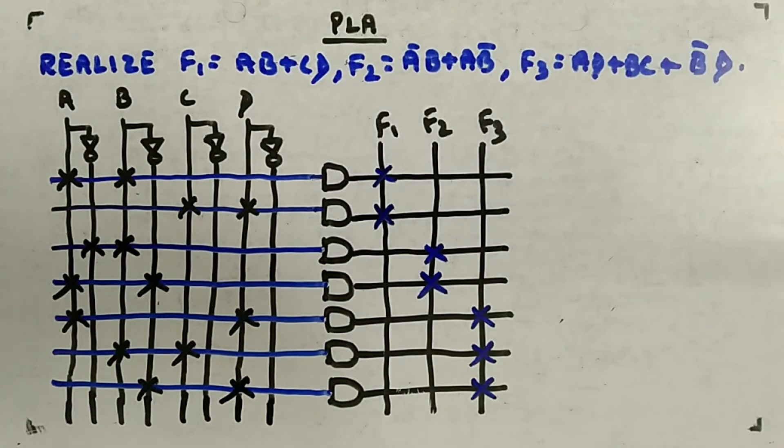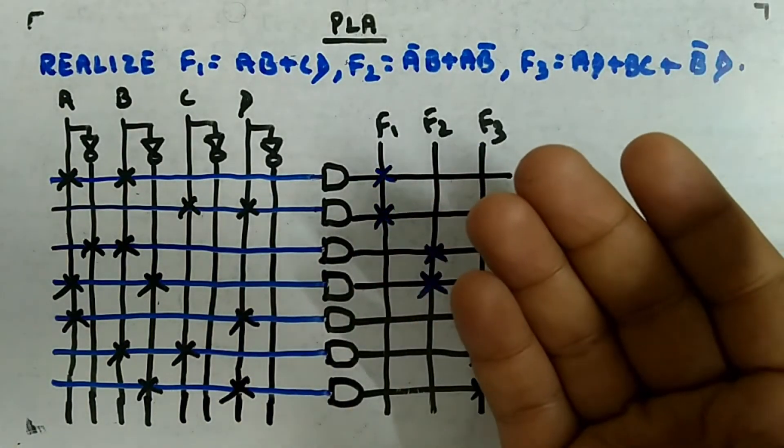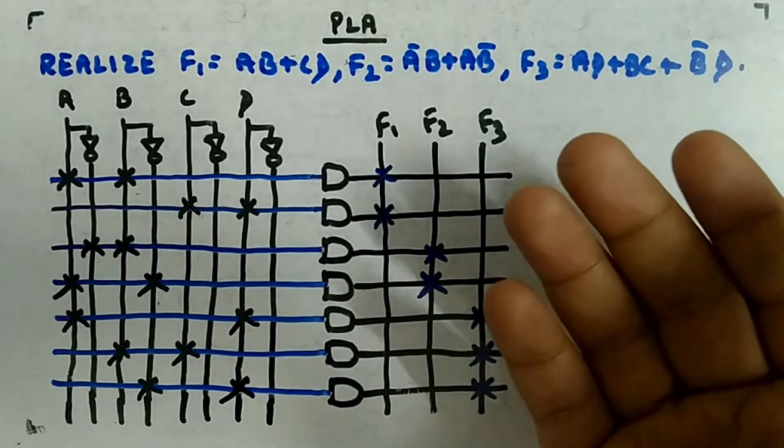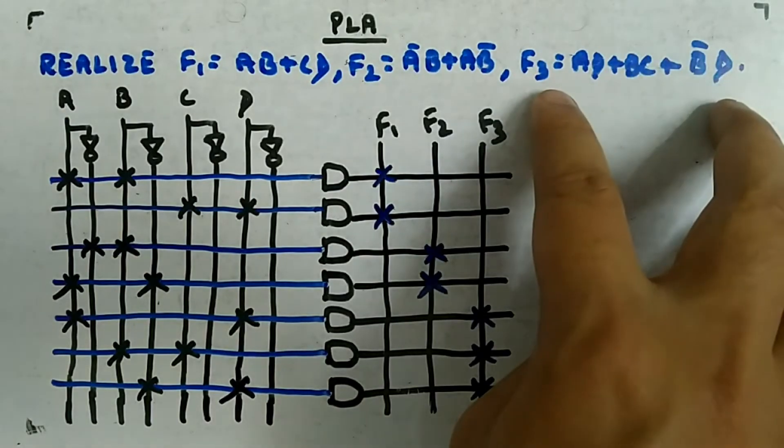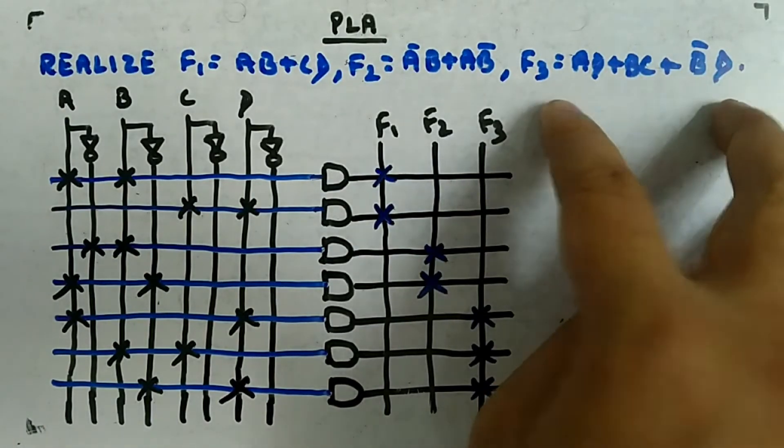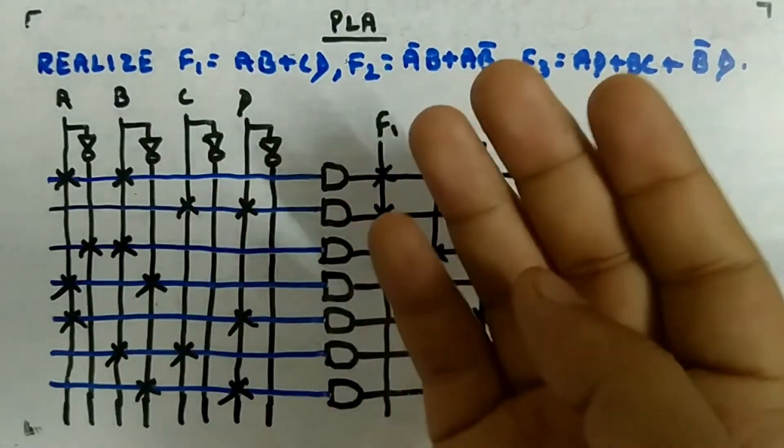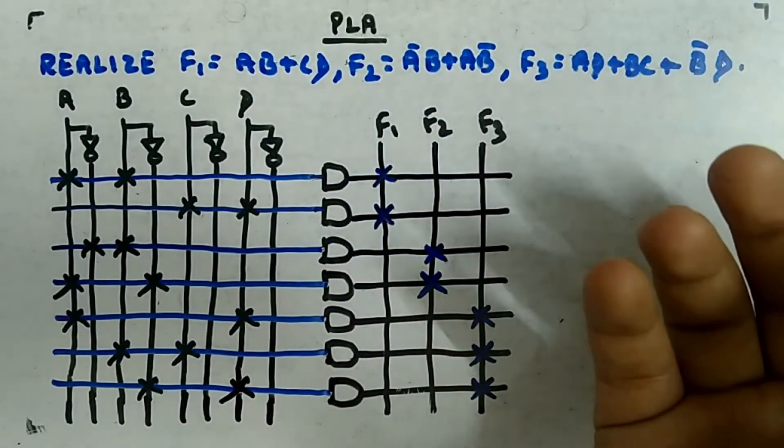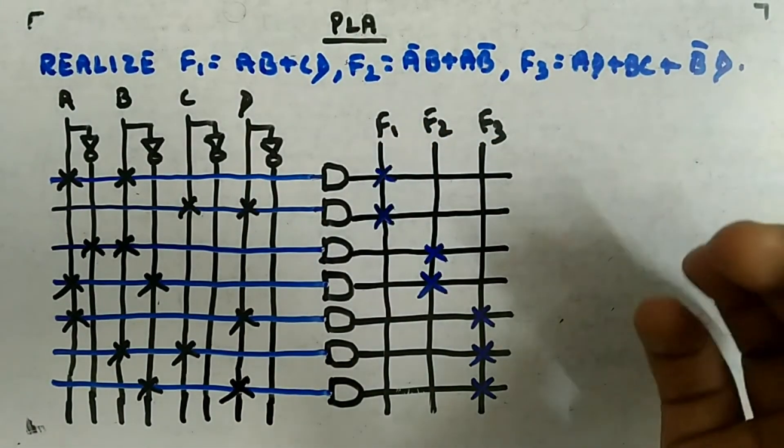So you can see the distribution is not equal - not all the AND gates are given equally. Plus, you don't have to generate all the min terms. If you were using PAL, you need to have AND gates according to the maximum min terms - that is three here. That many AND gates you have to allot to each function, so three, three, and three - total nine you would have needed in case of PAL. But here you are using only seven, so you can see the benefit.